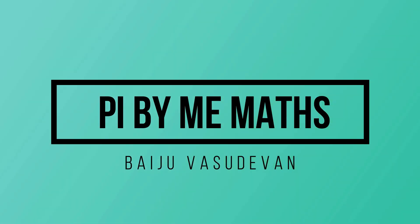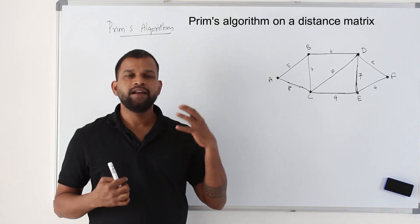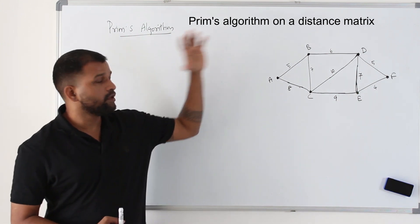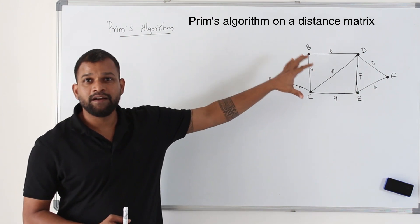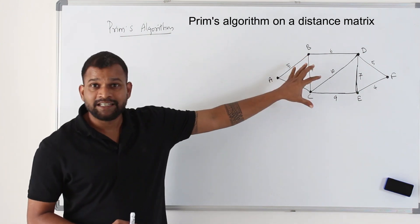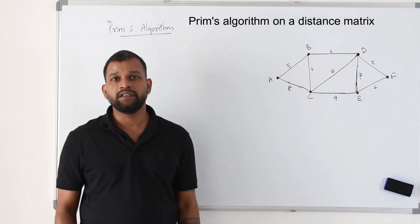Welcome back to my channel Pi by Me Mads, by Juvas Devan. In the previous video we learned how to apply Prim's algorithm on a given connected graph to find the minimum spanning tree.